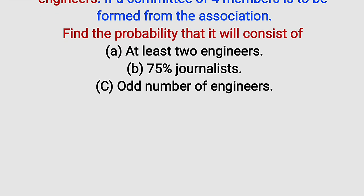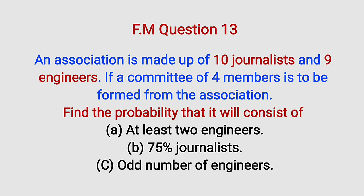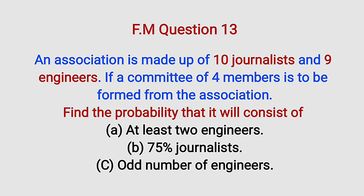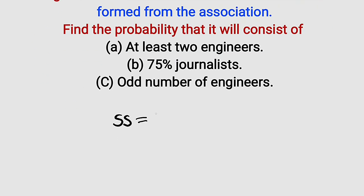Let's start with the sample space — let's call it SS. We have 10 journalists and 9 engineers, so altogether we have 19 people, but we are selecting only 4. Therefore, 19 combination 4 will give us the sample space, that is the total possible outcomes. 19C4 is equal to 3,876. This is our sample space.